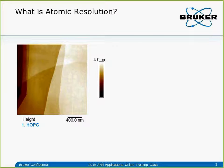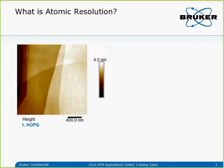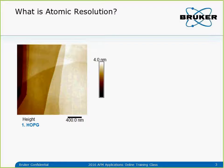Let's look at some examples. The first is HOPG — many of you have likely imaged this, probably one of the first samples you image when learning AFM. You can see nice atomic steps, probably a few angstroms each step. The scan size is two microns, so it's not small. Do we call this atomic resolution imaging? Of course not — for atomic resolution we want to see atomic scale features in the XY direction. This one doesn't qualify.